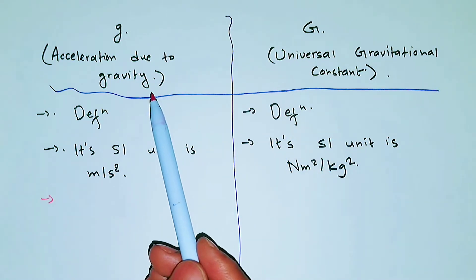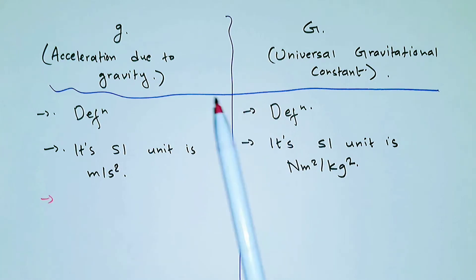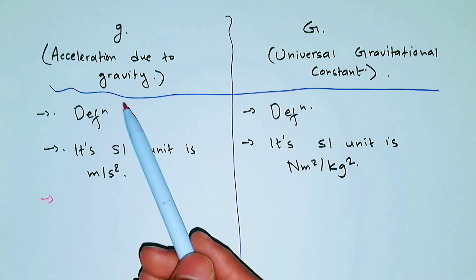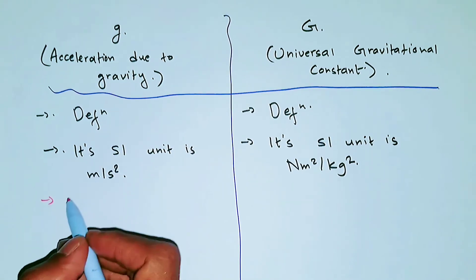So its acceleration due to gravity in Jupiter is higher than on Earth, and the acceleration due to gravity on moon is low because the gravity is less. So its value changes.